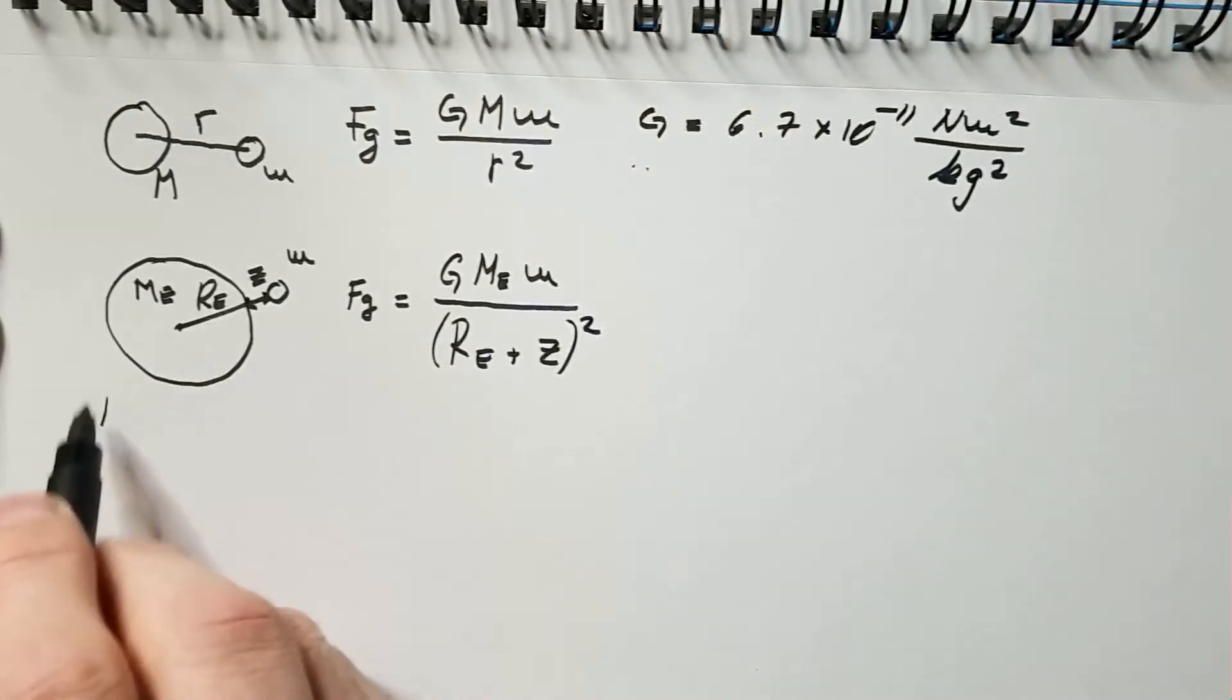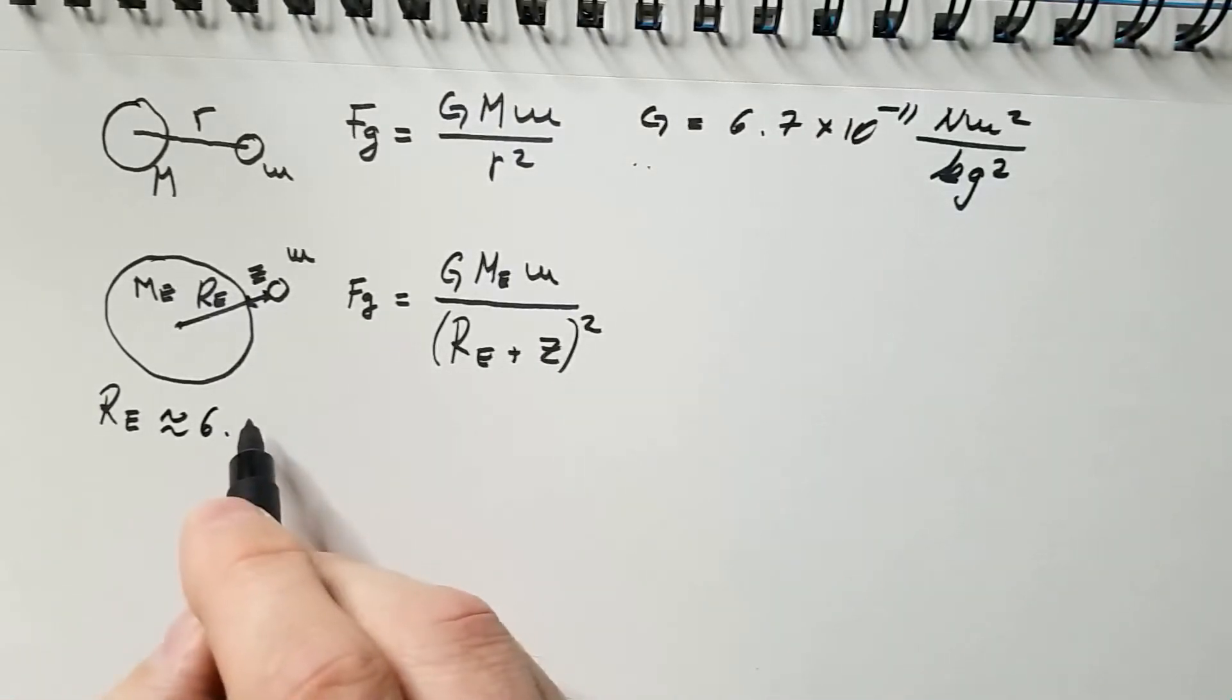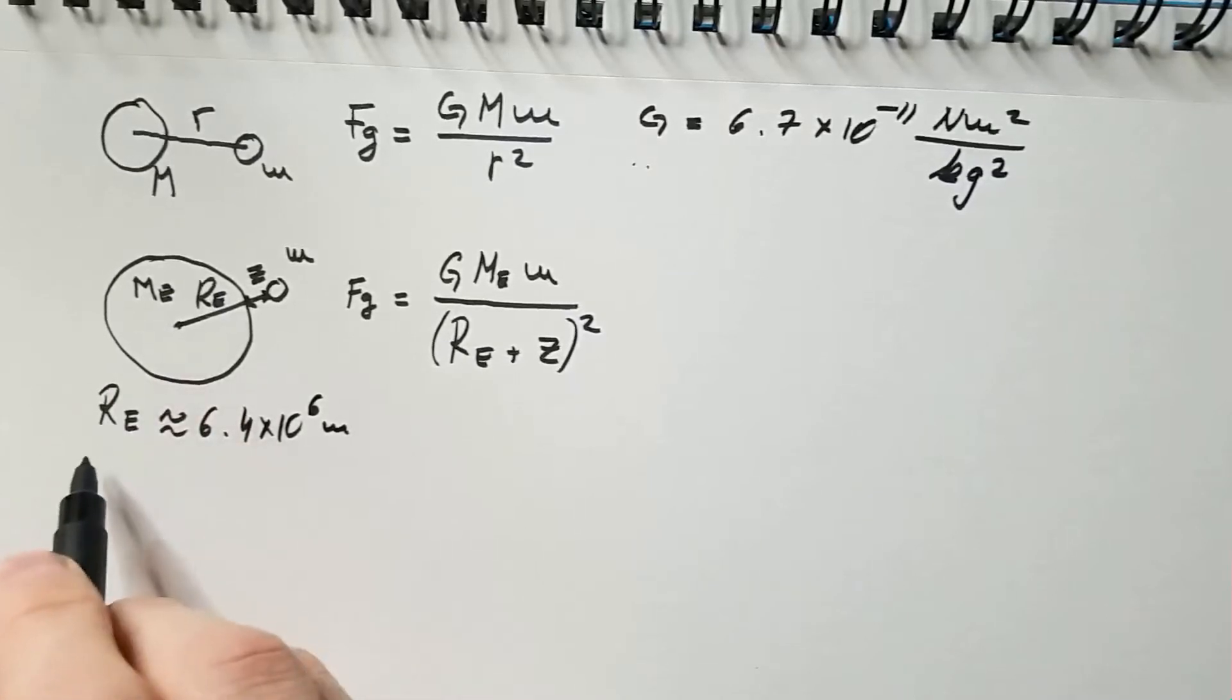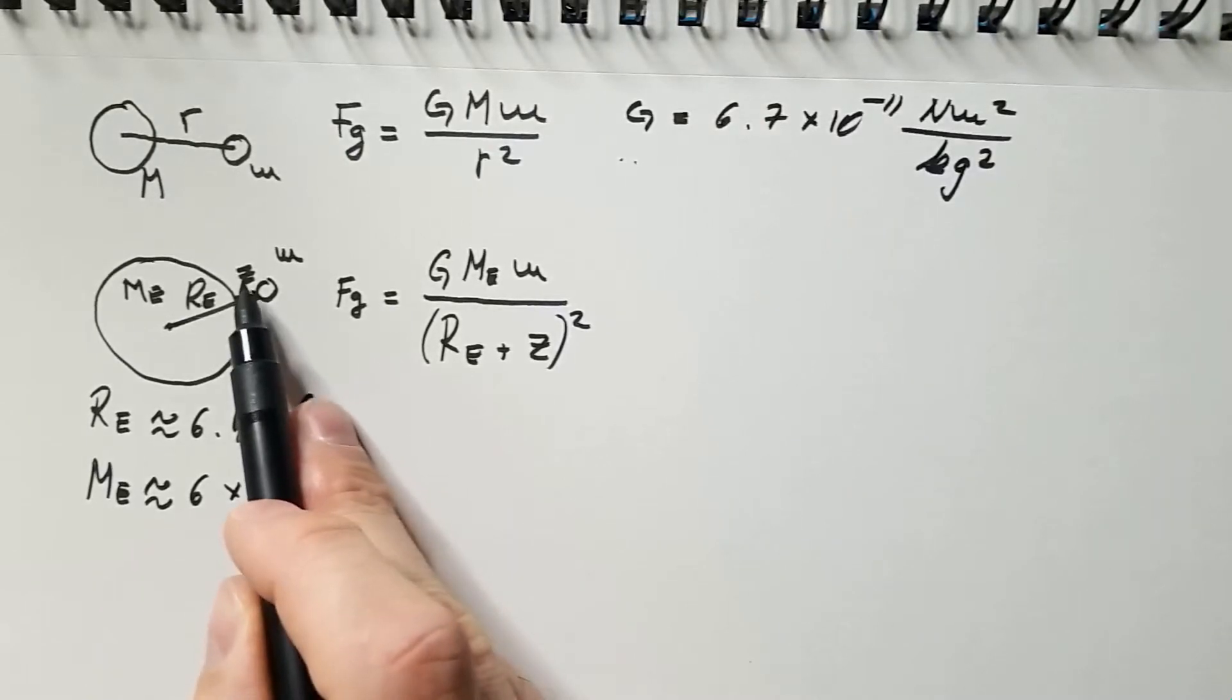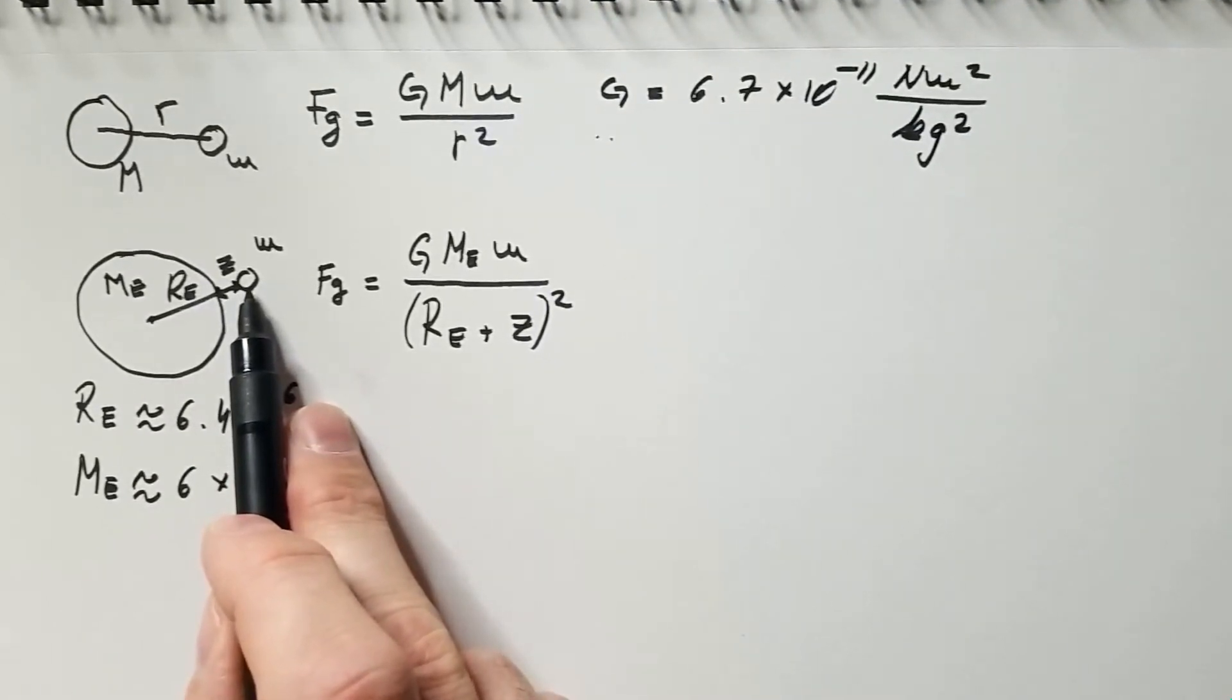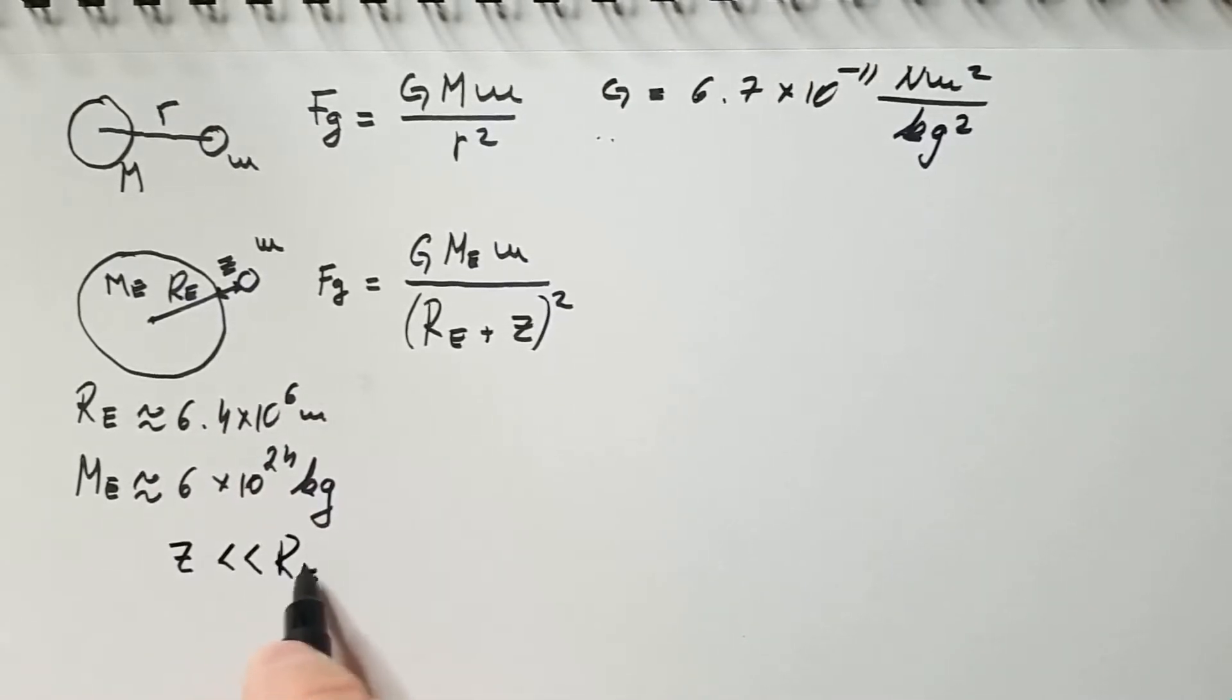Now, radius of Earth is approximately 6.4 times 10 to the power of 6 meters, whereas the mass of Earth is approximately 6 times 10 to the power of 24 kilograms. Now, we can already see that this z is typically much smaller than R_e, because the heights that we are interested in are order of magnitude of a few meters, few hundreds of meters, few thousands of meters, and so on, but not as large as radius of Earth. So, we conclude that z is much, much smaller than R_e.